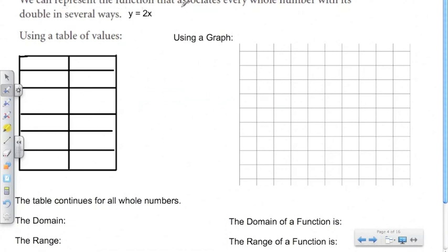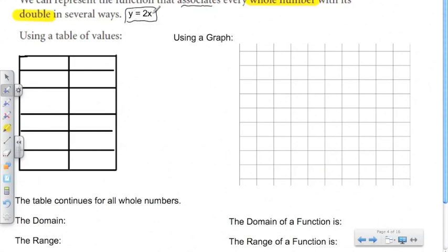Here it's asking us to represent the function that associates every whole number with its double. So we're associating every whole number — 1, 2, 3, 4, 5, all the way to infinity — with its double. That's represented by the function y = 2x. For any whole number that I put in for x, y is going to end up being its double, because this function is essentially multiplying any x by 2.